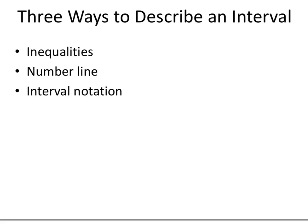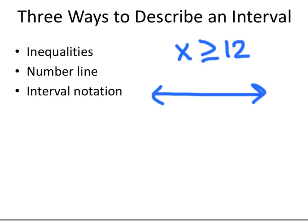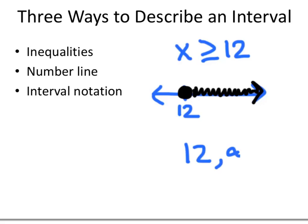A slight variation: numbers x greater than or equal to 12. On the number line, we draw a filled-in dot at 12 and shade upward forever. In interval notation, we go from 12 to infinity, including 12 with a square bracket but never including infinity with a square bracket: [12, ∞). We never write a square bracket around infinity because it is not a number — it just indicates we keep going forever.